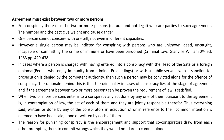When two or more persons enter into a conspiracy, any act done by any one of them pursuant to the agreement is in contemplation of law the act of each of them, and they are jointly responsible. Everything said, written, or done by any of the conspirators in execution of or in reference to their common intention is deemed to have been said, done, or written by each of them. The reason for punishing conspiracy is the encouragement and support that co-conspirators draw from each other, prompting them to commit wrongs they would not dare to commit alone.